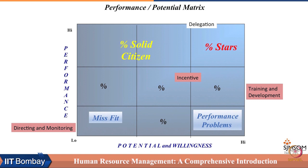If we look at the overall picture and want to plot people across the organization in terms of their talent value, this graph can be plotted between performance, potential, and willingness. Using this framework, we can categorize talent. The first category is talent that is high in terms of performance and slightly lower — or in the middle range — on potential and willingness. They constitute solid citizens of the organization.